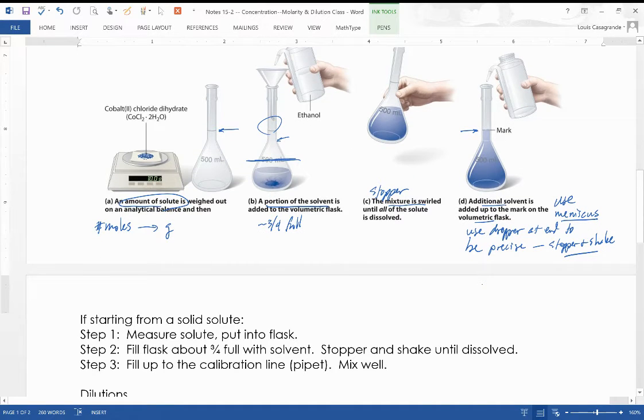So we're coming up to that mark. We're going to use the meniscus. As we've done before, the bottom of the meniscus, use that meniscus, and you might want to use a dropper or pipette at the end to be precise. Make sure you get exactly how much solute you need in there. Add it up to the mark in the volumetric flask. Once you do that, stopper and shake again, and you will have the solution that you're looking for. So I've outlined those steps. Step one, measure the solute—that assumes you've calculated the needed mass. Put it into the flask, fill up to about three quarters full with solvent—it doesn't have to be exact. Stopper and shake until dissolved. Fill it up to the calibration line. Use a dropper or pipette. And then you mix it well. And then you have the solution that you need. So that's how you're going to think about making a solution, and that'll be covered in the lab as well, if you're starting with a solid solute.